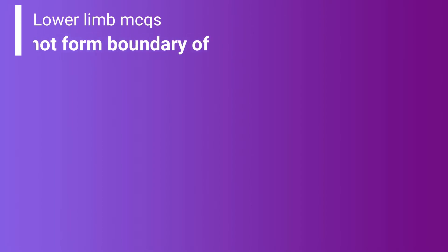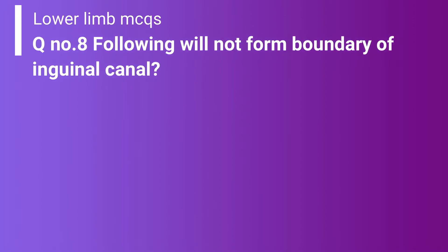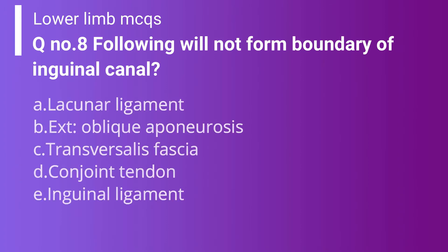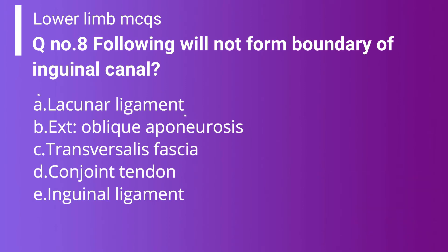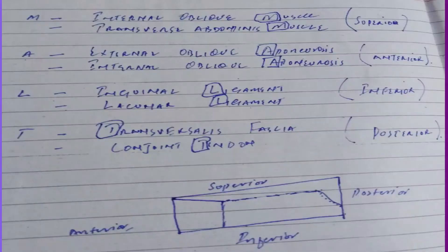Question 8: Which of the following does NOT form the boundary of the inguinal canal? Option A: Lacunar ligament. Option B: External oblique aponeurosis. Option C: Transversalis fascia. Option D: Conjoint tendon. Option E: Inguinal ligament. This is a very important question asked frequently in exams. The correct answer is Option A — lacunar ligament — as it does not form the boundary of the inguinal canal. The boundaries are remembered using the mnemonic MALT: superior, anterior, inferior, and posterior.